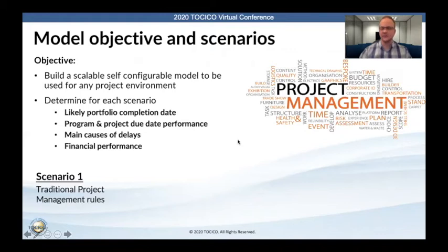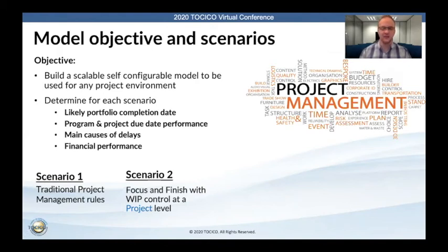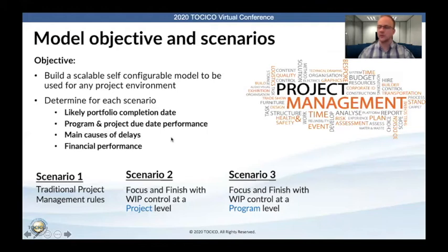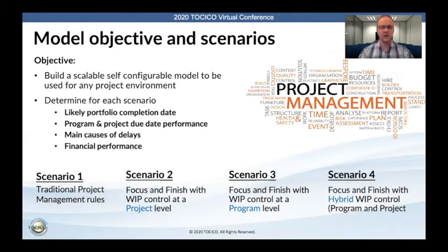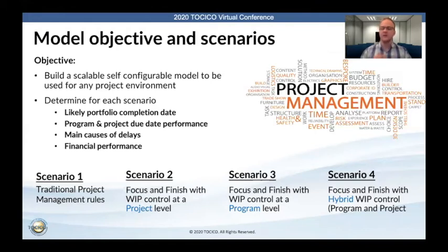The first scenario was going to be the traditional project management rules, which causes the three main decision mistakes that Alan covered previously. The second scenario was a focus and finish scenario that prevents multitasking, with WIP control at the project level. The third scenario was also to prevent multitasking, but this time controlling WIP at a program level. The fourth scenario was a hybrid rule where we limit WIP at a program level but also monitor the backlog in front of critical resources — as soon as that backlog gets too low and there's a risk of starving those critical resources, the rule detects this, overrides your WIP control limit, and releases another program that requires those critical resources to ensure you don't waste their capacity.